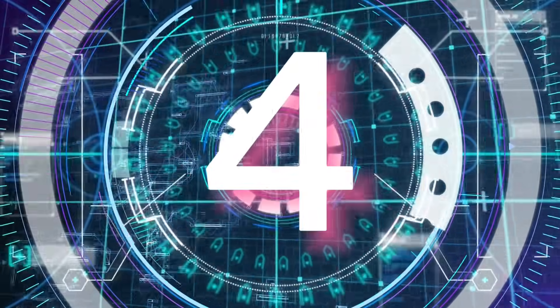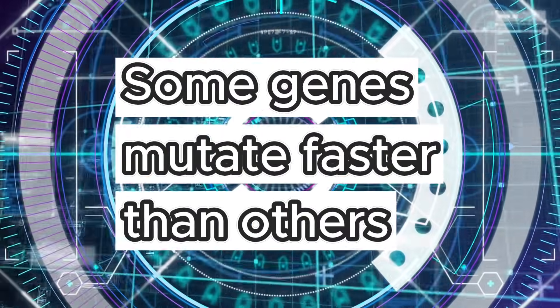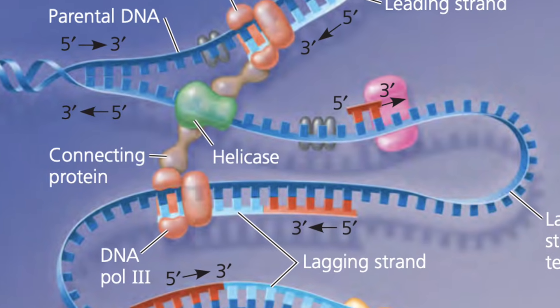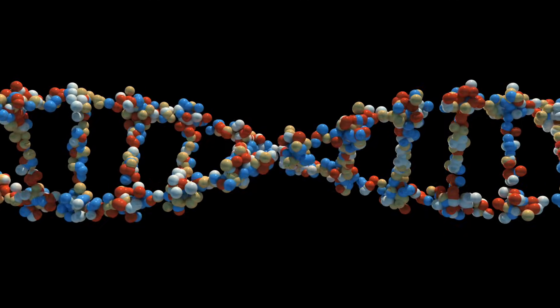Number four is one of my favorites: some genes mutate faster than others. This one needs a little explanation because we know that mutation is a random process. So it doesn't make sense for certain genes to mutate at a faster rate than others if the polymerase makes errors at a random rate. But it is true that certain genes, over the same period of time, seem to accumulate more mutations compared to some more conserved genes. While the mutation rate may be the same, the survivability of genes with those mutations need not be the same.